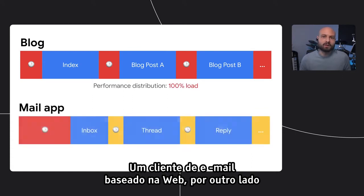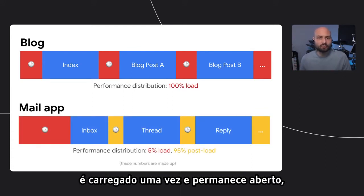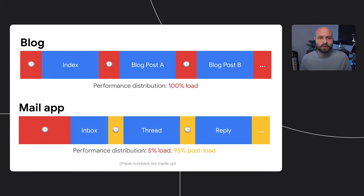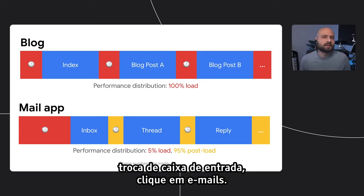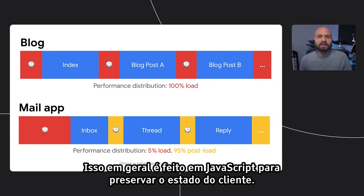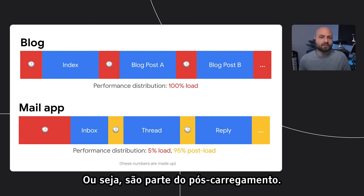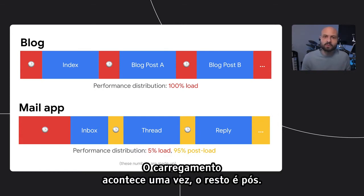Something like a web-based email client, on the other hand, is typically loaded once and stays open forever, loading data from API endpoints when a user interacts with the app. Even in cases where interactions feel like a navigation — switching inboxes, clicking on a message — those are typically done in JavaScript to preserve client-side state, and that means they're still considered part of post-load performance. Loading happens once; the rest is post-load.